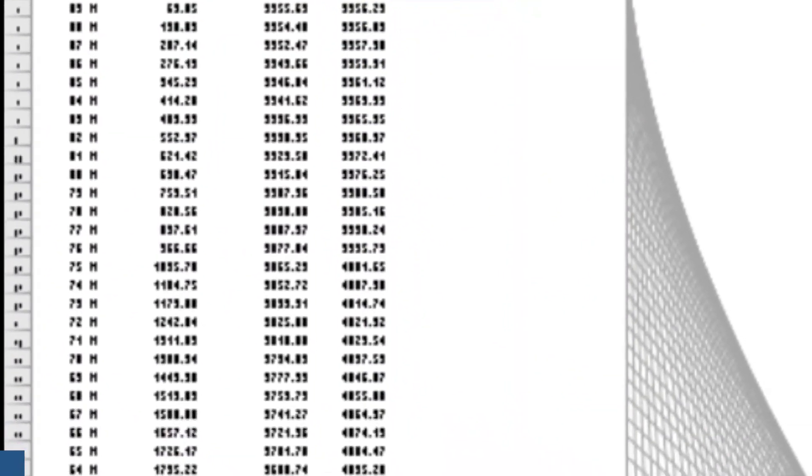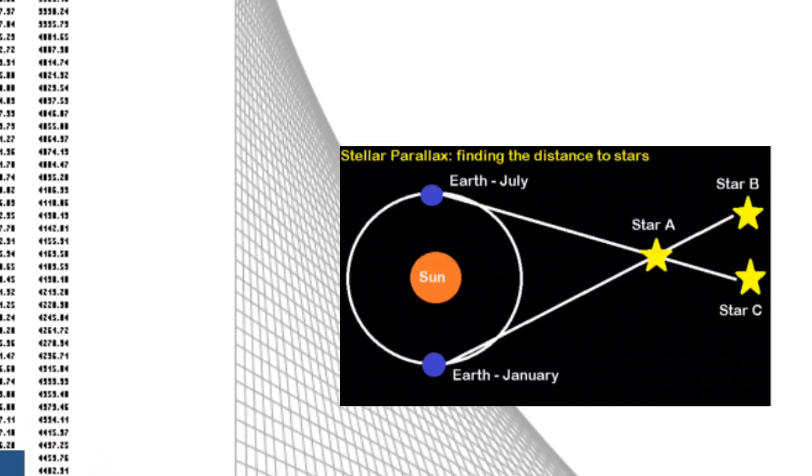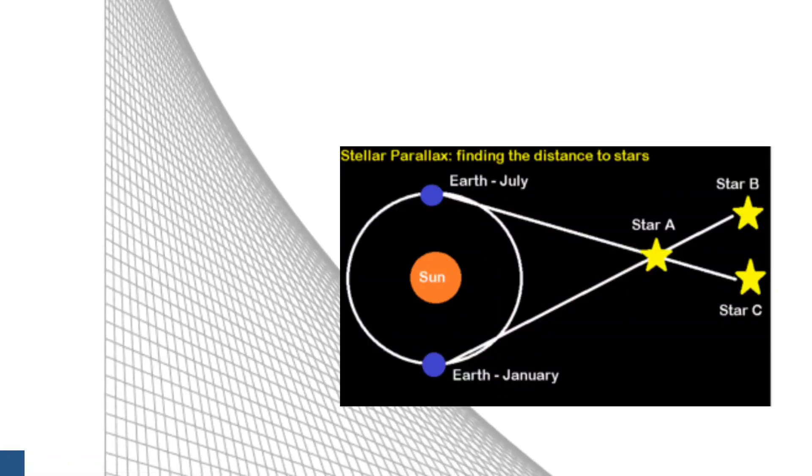Where did you come up with this distance, and where exactly does this match the globe model? I'm sure you're aware that stellar parallax is used to calculate the distance to stars, right?